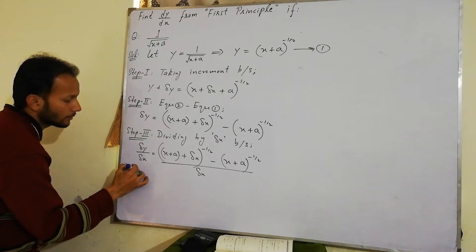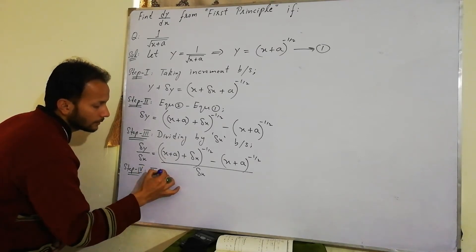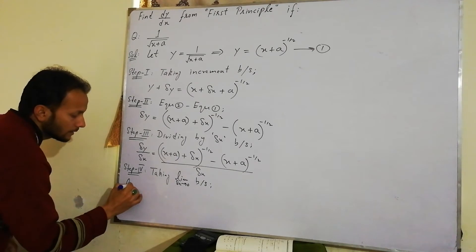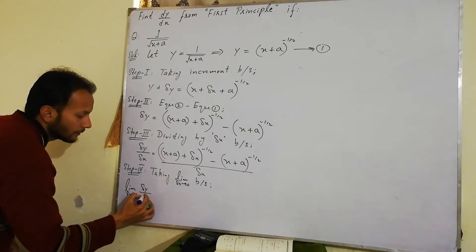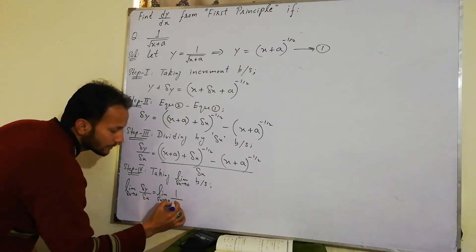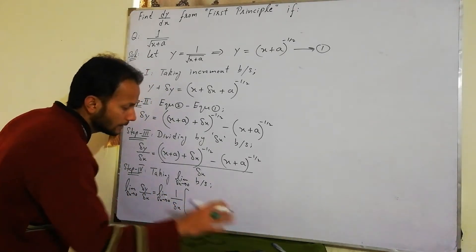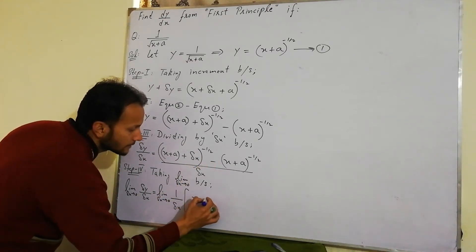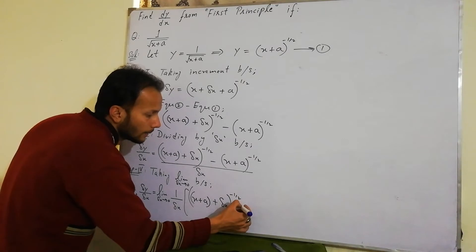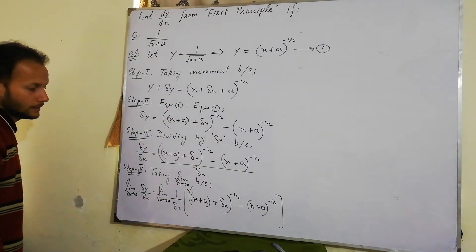Step 4: taking limit as Δx approaches 0 on both sides. Toh: lim(Δx→0) Δy/Δx = lim(Δx→0) [(x + Δx + a)^(-1/2) - (x + a)^(-1/2)] / Δx. Yeh the 4 steps complete ho gaye. Ab simplification ki taraf chalte hain.